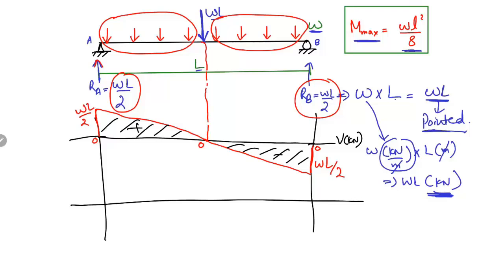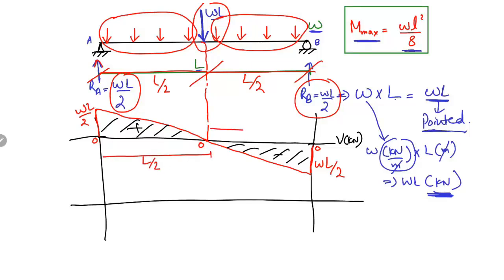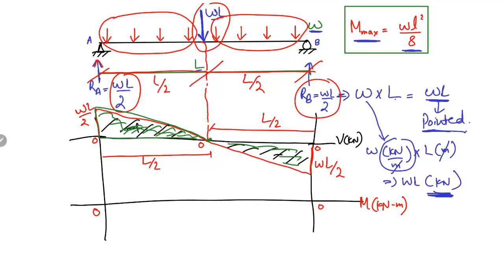To draw the bending moment diagram, we know that the supports are zero-moment references. The bending moment can be found from the area under the shear force diagram. The concentrated equivalent load acts at the midpoint, which is at a distance of L/2 from each support. We need to find the area of the shear force triangle on either side, and that area gives us the maximum bending moment, which occurs at the midpoint.